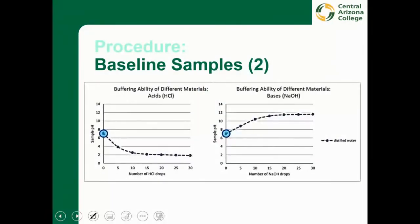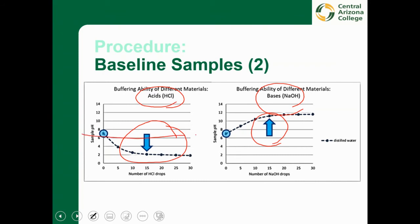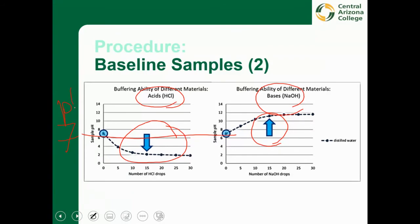Before we get that far, we need to establish a baseline — the starting point that tells us what would happen normally. For this experiment, we used distilled water as a baseline. When we add acids to distilled water, it turns more acidic; when we add bases, it turns more basic. This gives us a graph showing pH going down as more acid is added, and pH increasing as more base is added, starting from a neutral pH of 7.